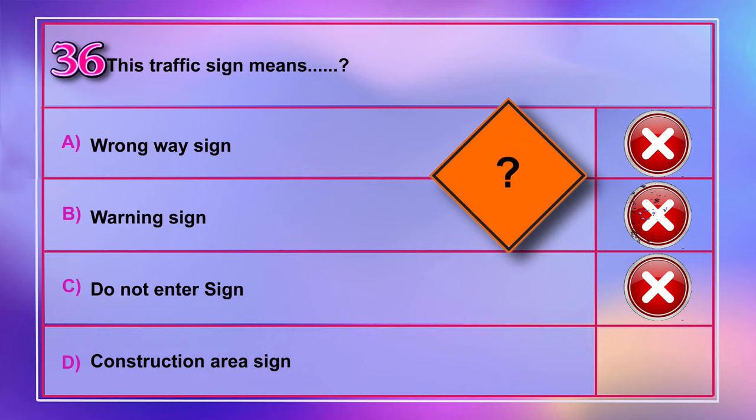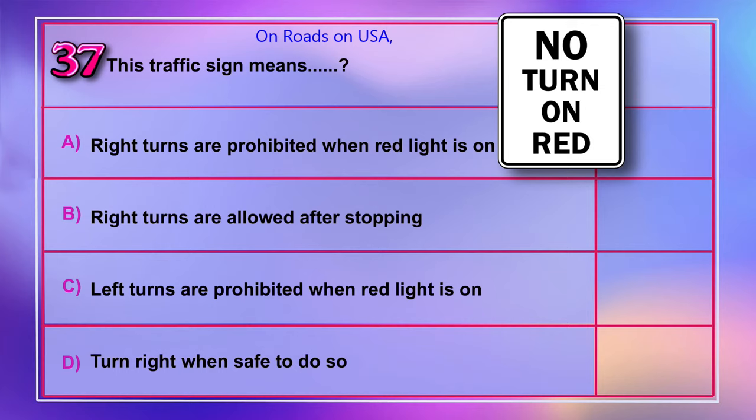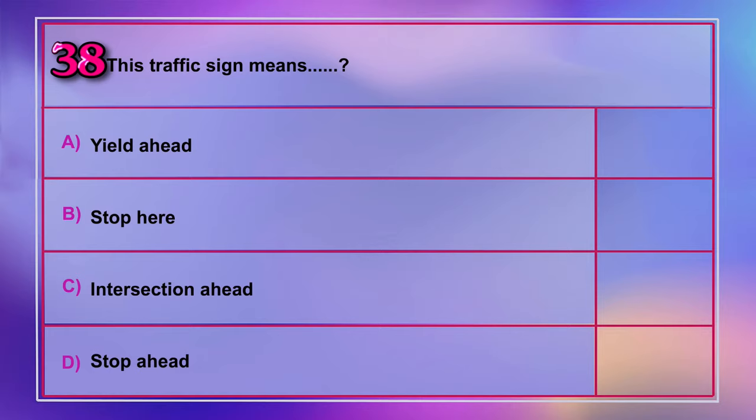Question number 37: This traffic sign means A) right turns are prohibited when red light is on, B) right turns are allowed after stopping, C) left turns are prohibited when red light is on, D) turn right when safe to do so. Correct answer is A: right turns are prohibited when red light is on.